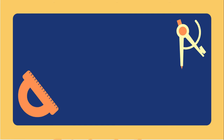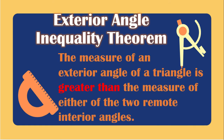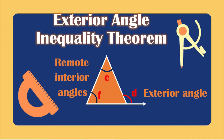Let's have the next theorem — the exterior angle inequality theorem. It states that the measure of an exterior angle of a triangle is greater than the measure of either of the two remote interior angles. So in one triangle, if we extend one side, we will create an exterior angle D. The remote interior angles are the angles far from the exterior angle — those are angle E and angle F.